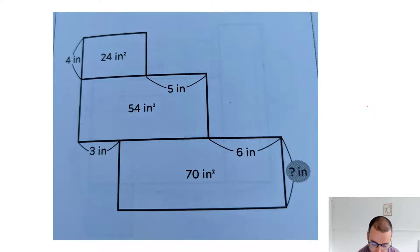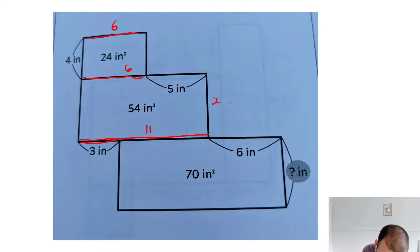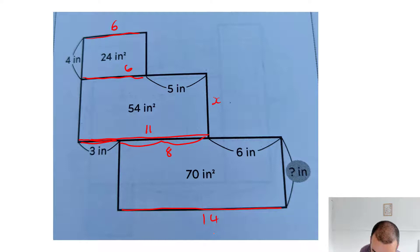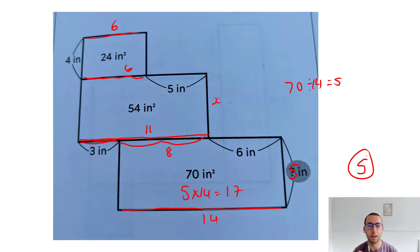Four times six is 24, so this length is six. So this length is six, so this whole length is 11. We don't need to find this length here, because 54 is not in the 11 times table. But if the whole bit's 11 and this bit is three, this bit has to be eight. So we have this whole length being eight plus six, which is 14. And 14 is a factor of 70 — 70 divided by 14 is five to find this missing length. So the answer is five. We just used what we knew and flowed through the puzzle.